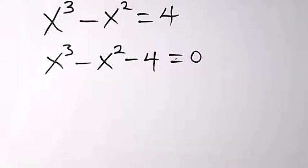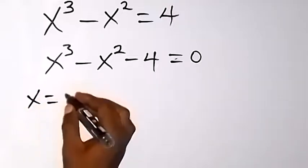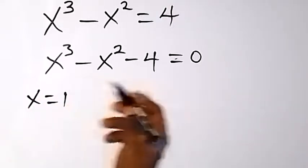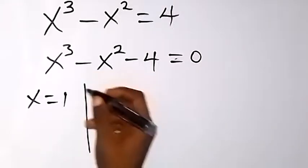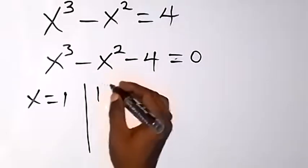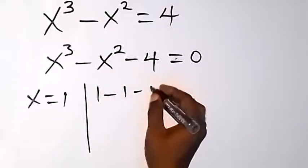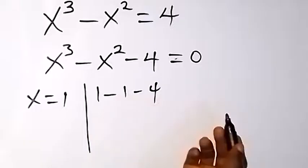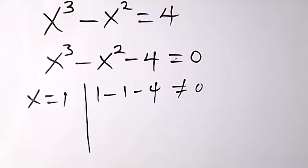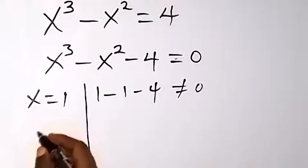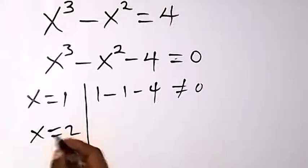By inspection, we can check for a number that will be a root of this cubic equation. Let's try x equals 1 — will x equals 1 be a root? When we substitute 1: 1 raised to power 3 is 1, then minus 1 squared is 1, then minus 4. So 1 minus 1 is 0, minus 4 gives minus 4, which is not equal to 0. So x equals 1 is not a solution.